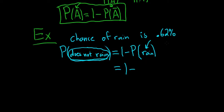So this is equal to 1 minus. Now here's the tricky part. We know the chance of rain is 0.62%. But that's not the probability. It's a percentage. So what you have to do is you have to take this decimal place and move it over two places to the left. So that will give you 0.0062.